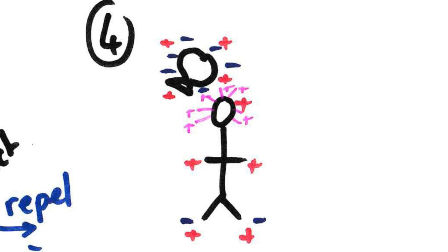When you bring this negatively charged balloon close to the human being, because the human has lost some of its negatives, the human is now positively charged. All the negatives on the balloon attract the positive charges on the hair, and so the hair stands on end, attracted towards the balloon.